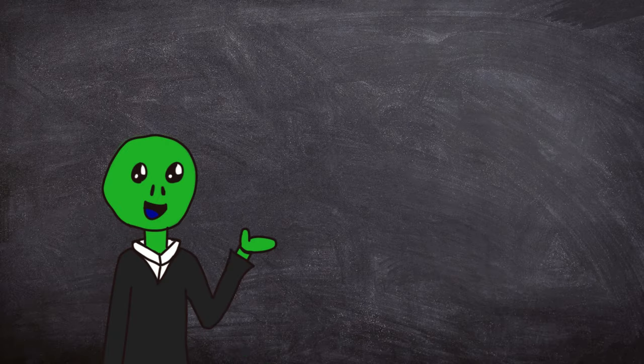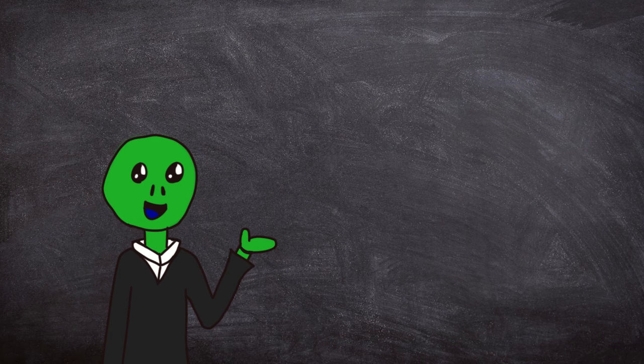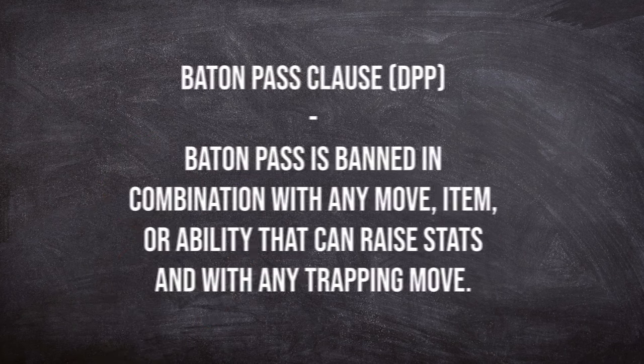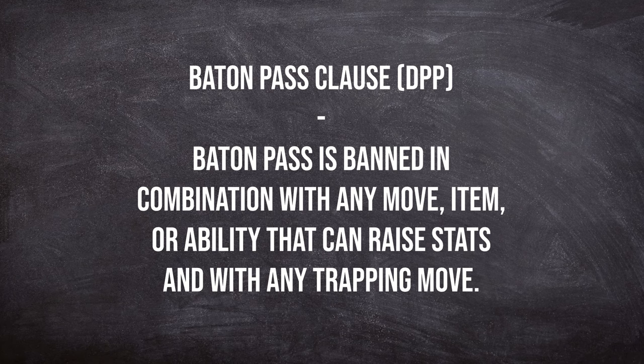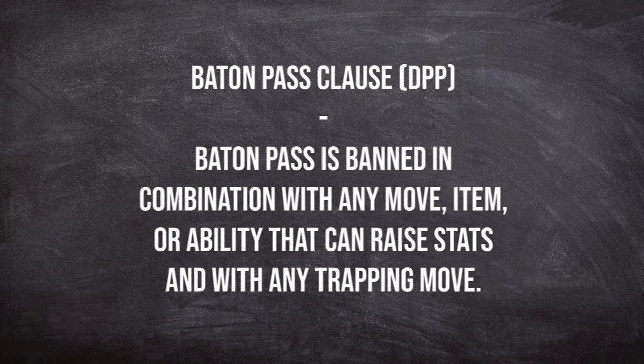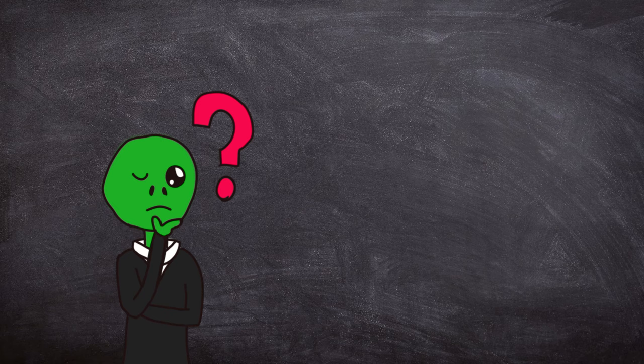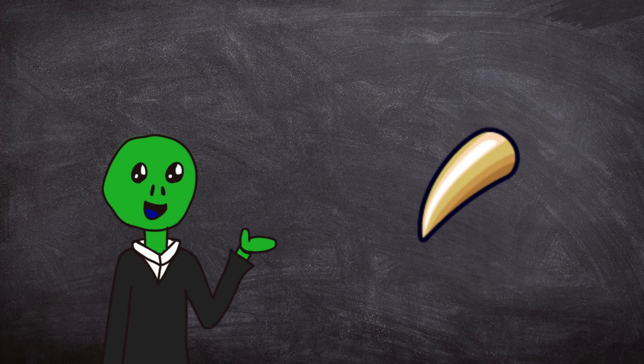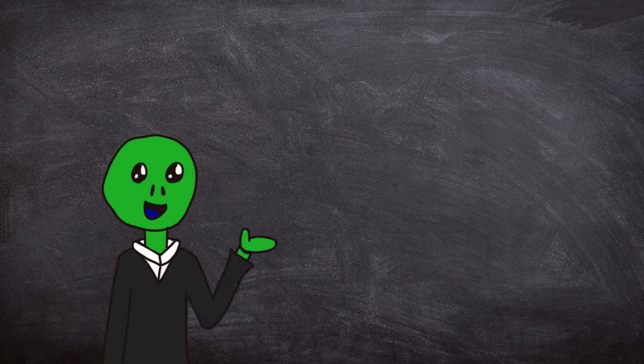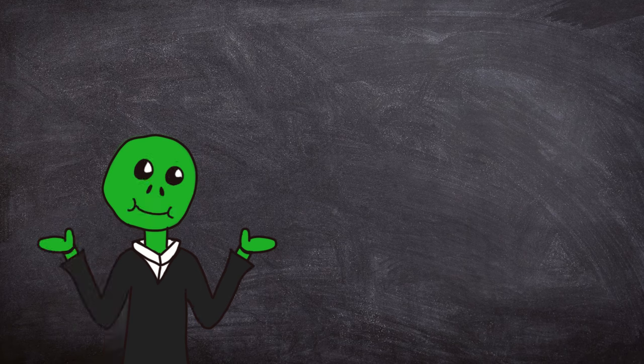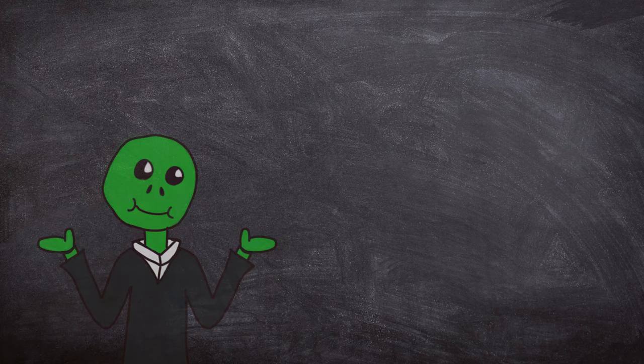The only notable clause that is different in generation 4 is once again the Baton Pass Clause. The only way it's different is that you're not allowed to use a baton pass at all with any boosting move or trapping move. Meaning you're not allowed to pass a single stat boost, not even speed. You may only use baton pass to switch out your Pokemon. The only other thing that I could talk about is the banning of quick claw, and the only reason is that the usage of this item revolves around luck. I won't go too into depth about it because I'm planning on making a video on it and other similar banned items, but just rest assured that this item was banned due to it causing a lot of uncompetitive strategies.